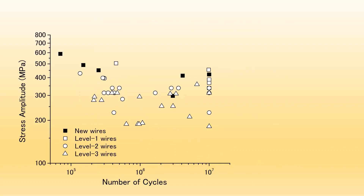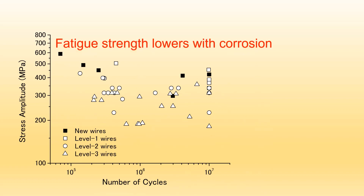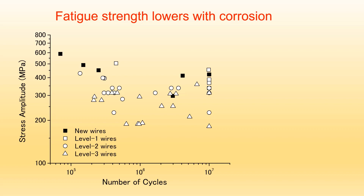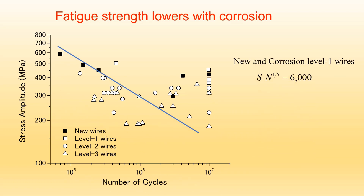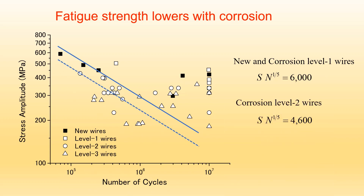We carried out cyclic tests with wires at different corrosion levels. This is the SN curve — the y-axis is the stress amplitude and the x-axis is the number of cycles until breakage. You can understand that fatigue strength lowers with corrosion. This is the proposed design SN curve for new and corrosion level 1 wires, for level 2, and for level 3.